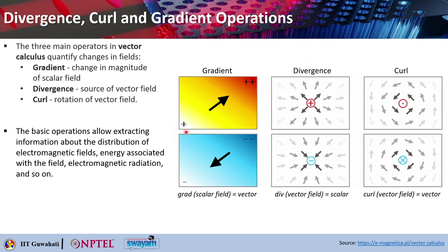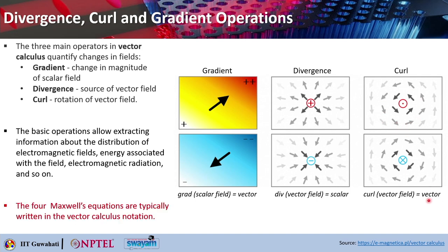For example, if positive charges are concentrated in one region, the gradient points in that direction. Taking the gradient of a scalar field gives a vector; taking the divergence of a vector field gives a scalar; and taking the curl of a vector field gives another vector. We will explore these in more detail in the following slides, as they are central to writing Maxwell's equations in vector calculus notation.